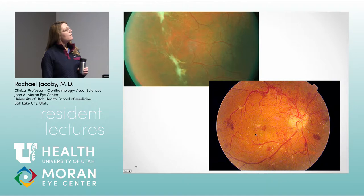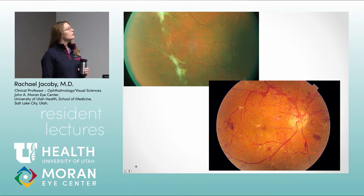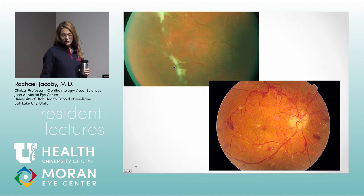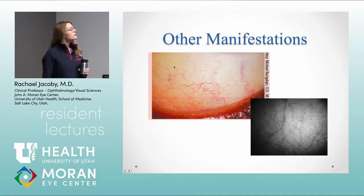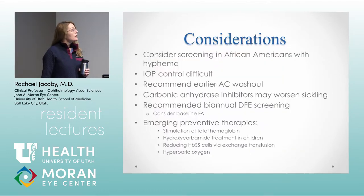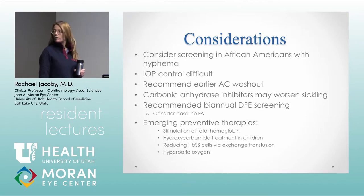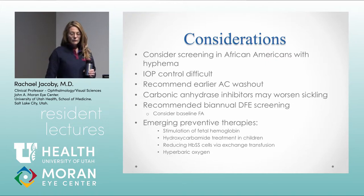In diabetic retinopathy, neovascular membranes are seen along the arcades and optic nerve, but in sickle cell the neovascularization occurs in the periphery. You can also see comma-shaped vessels on the conjunctiva. In African-American patients presenting with a hyphema, screen for sickle cell disease — pressure can be much more difficult to control and you want to consider earlier anterior chamber washout. Avoid carbonic anhydrase inhibitors as they can dehydrate and worsen sickling. A baseline fluorescein angiogram in a sickle cell patient is recommended to look for non-perfusion and proliferative disease.